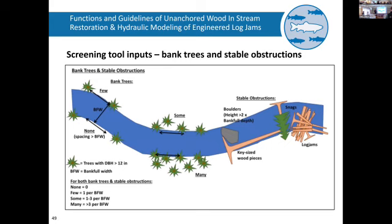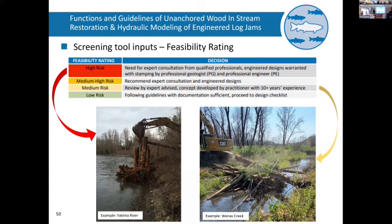What's your system currently? Is it a straight or sinuous channel? Do you have existing obstructions, come-in trees that tangle and catch wood? And then the feasibility rating — this is summarizing what I mentioned earlier: low risk means follow the guidance and go ahead and proceed. As that risk increases, you're just bringing in the expertise needed to move that forward.